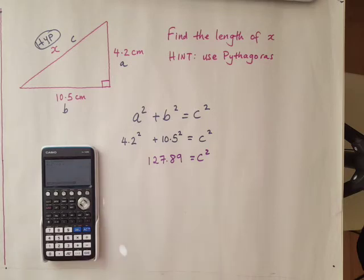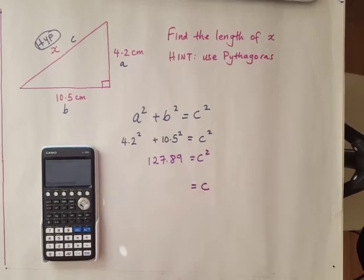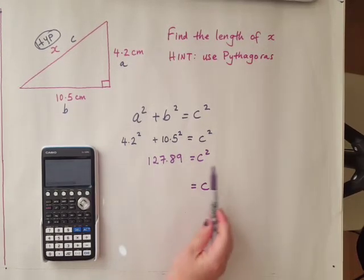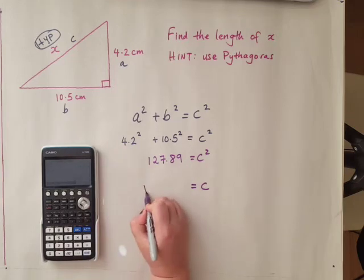Okay this is not our final answer. To get the final answer we want the length of X. So we want just the letter C. And so we're going to do the opposite of squaring which is square root.